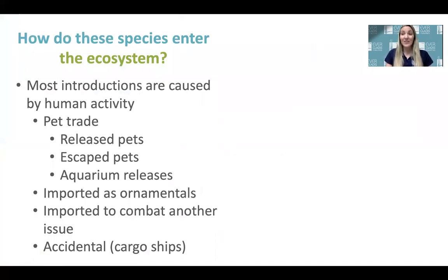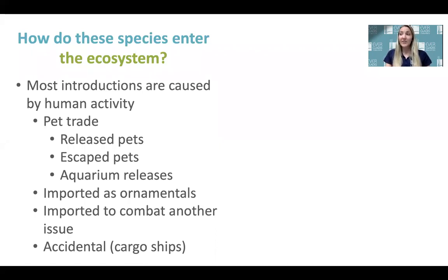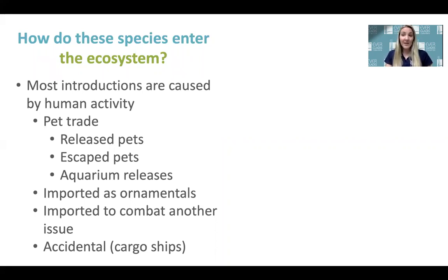Most introductions are caused by human activity. More than 80 percent of non-native reptiles and amphibians in Florida arrived through the pet trade — released pets, escaped pets, or aquarium releases. People also import non-natives as ornamentals for aesthetic reasons; some have little impact but others turn invasive. Some species were deliberately brought over to combat another species — for example, some trees were brought to the Everglades to help dry it up, and some insects and invertebrates were introduced to eat other species but became invasive themselves. Some animals accidentally hitch a ride on cargo ships coming into Florida ports every day.